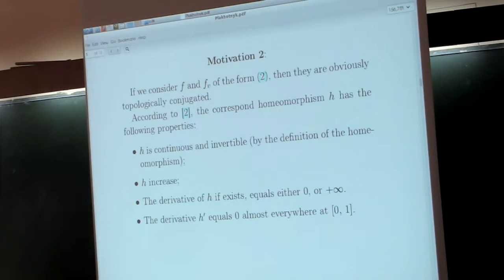This problem is not new. It was studied by American mathematicians, and some properties of this homeomorphism can be written out. First two are almost obvious. The fourth says the derivative, if it exists, equals zero or positive infinity, and the derivative equals zero almost everywhere on [0,1] in the Lebesgue sense. This shows that H is quite complicated and its study should be interesting.